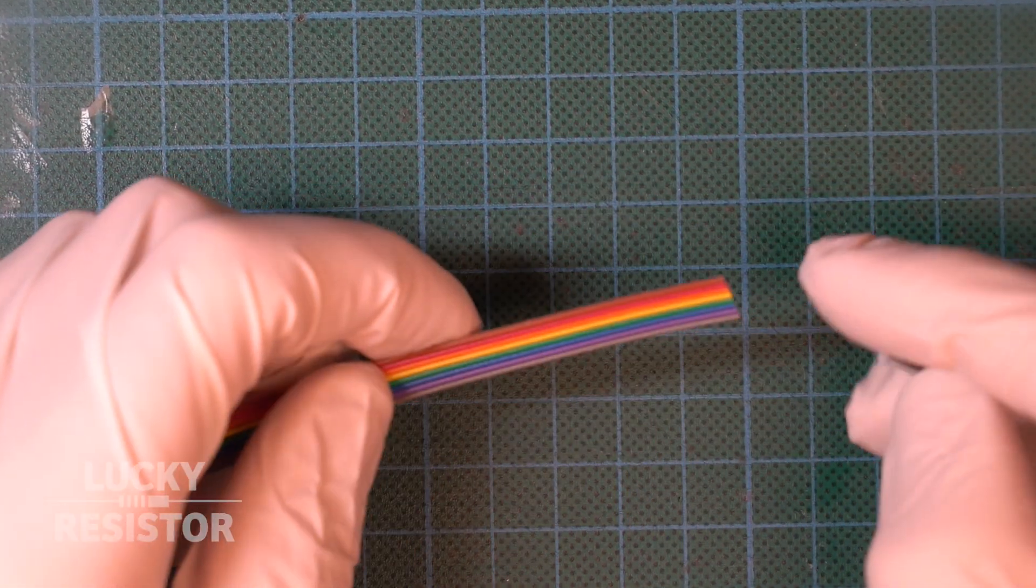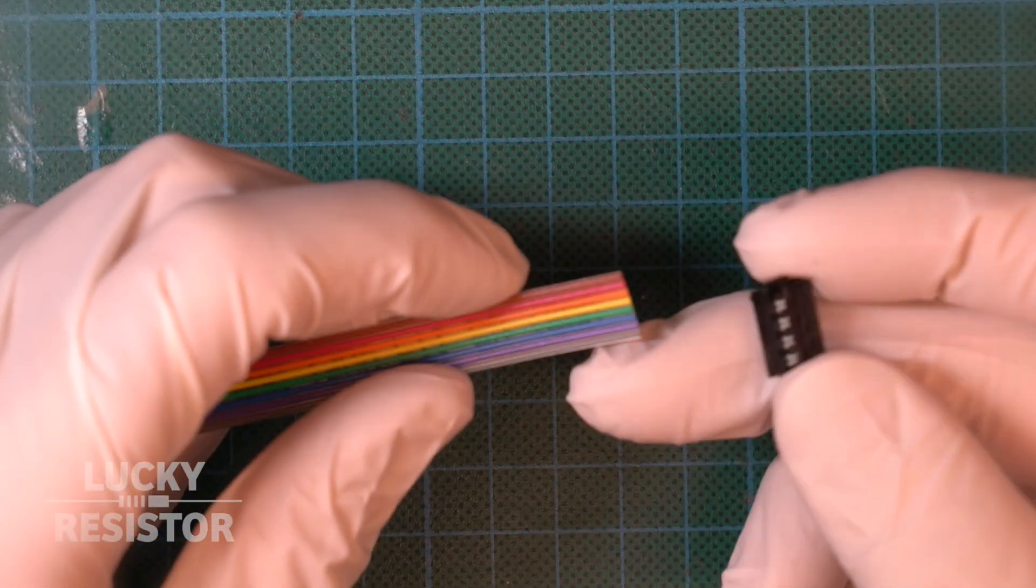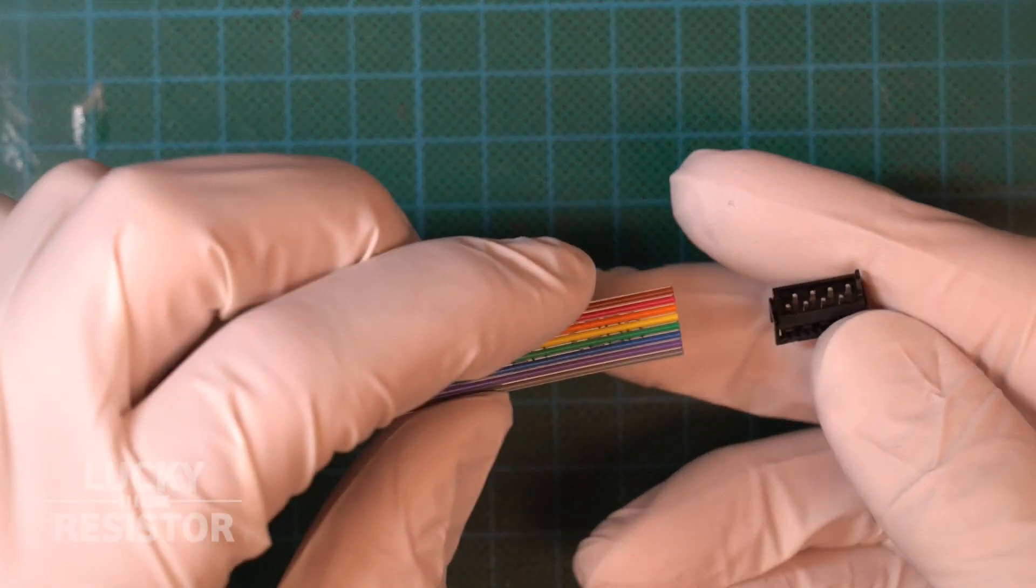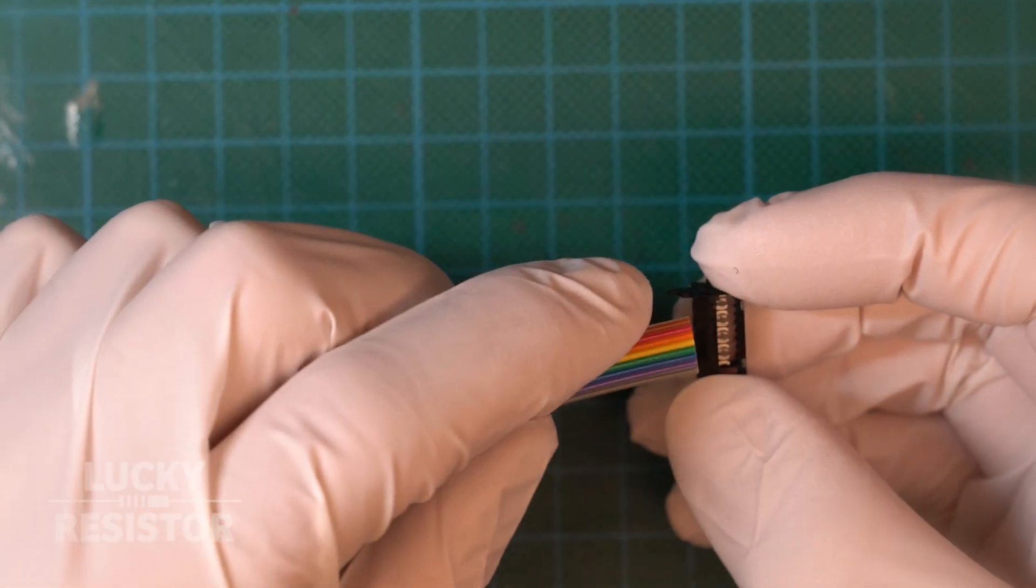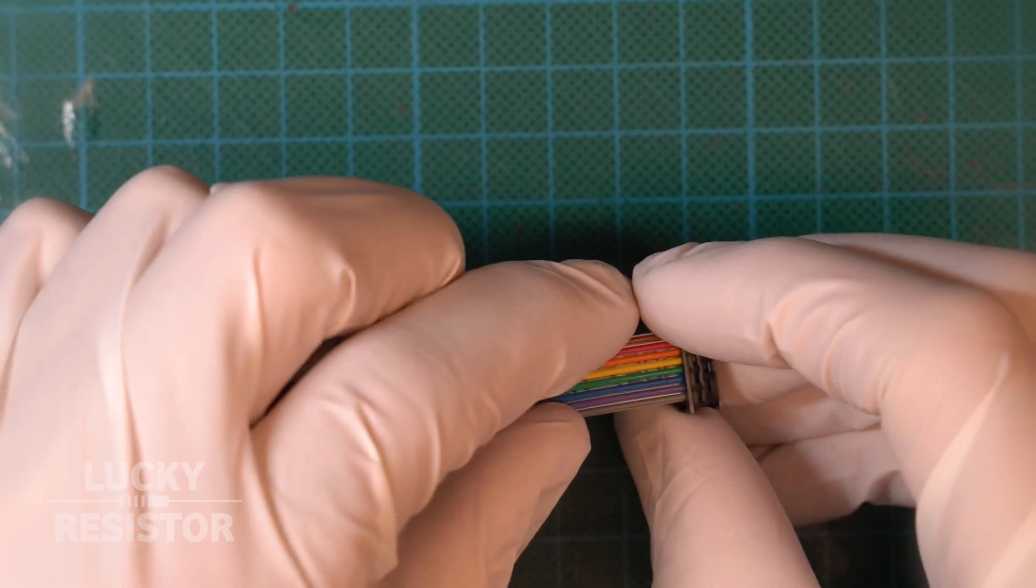It is important you use 28 AWG ribbon cable, as specified for these connectors. First, insert the cable into the connector and align the strands with the grooves.